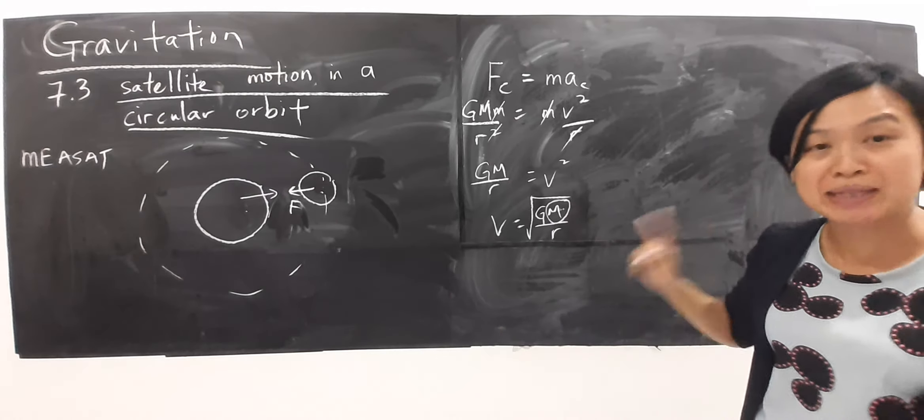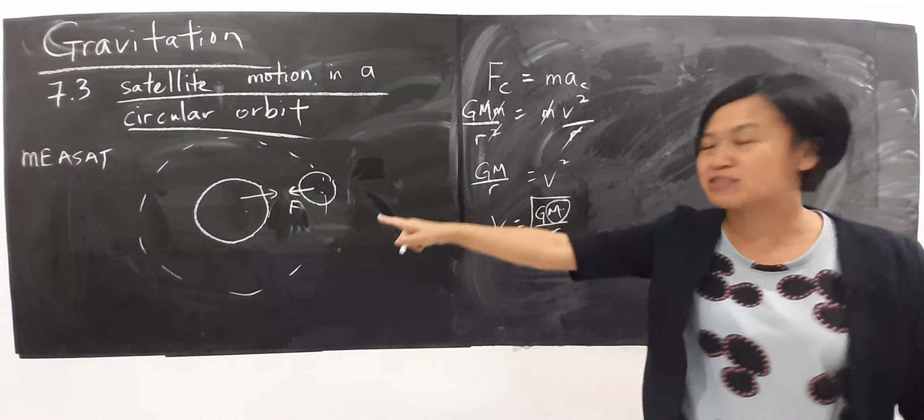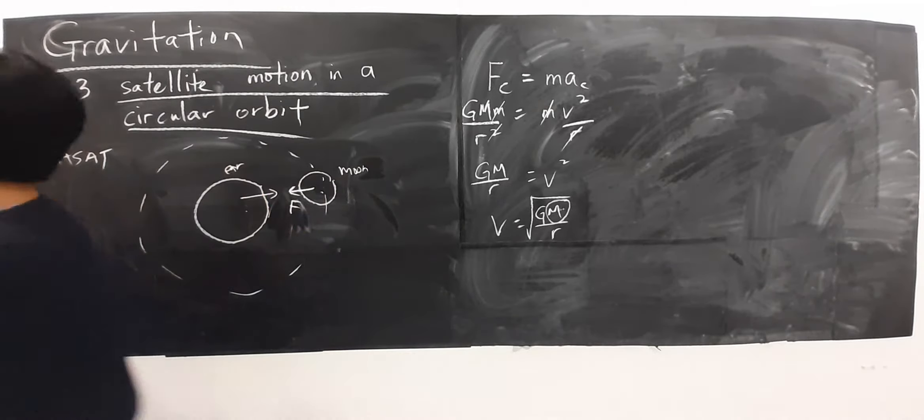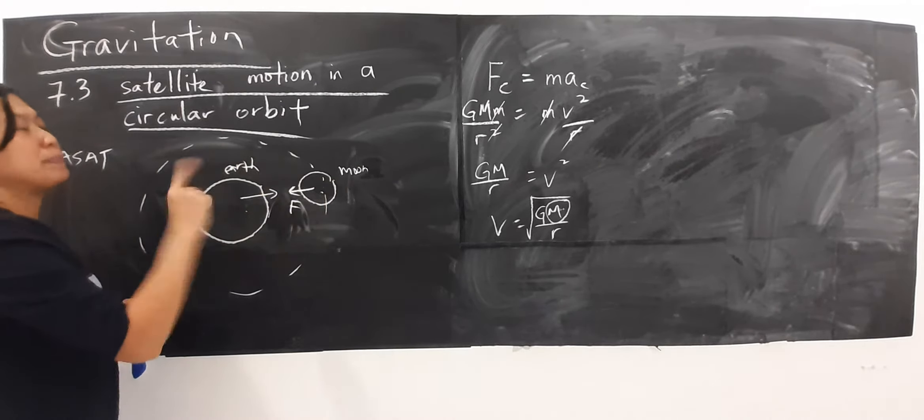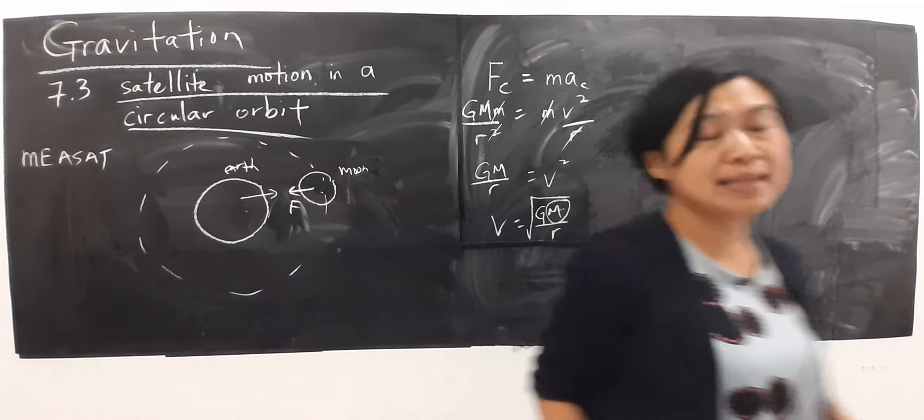capital M stands for bigger mass. Bigger mass in this case, for example, if it is moon, it is Earth. If it is Earth, so bigger M here, capital M here refer to mass for the Earth. Alright, so it is speed for the satellite.